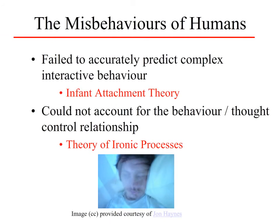And it's not just animals that misbehave — it's us humans too. Behaviorism failed to accurately predict some of the complex interactive behaviors that we see. For example, infant attachment theory: children who are more securely attached to their parents early on in life aren't holding on to their parents' apron strings later in life — they're actually quite independent. That was one crossover type of interaction that couldn't be predicted at the time by behaviorism.